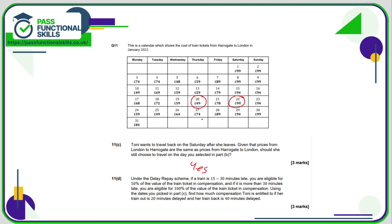Under the delay repay scheme: if a train is 15 to 30 minutes late you're eligible for 50% of the ticket value; more than 30 minutes late gets you 100%. Using the selected dates — 49 pounds outward on Thursday, 99 pounds return on Saturday — if the first train is 20 minutes delayed that's 50% off 49: 49 divided by 2 is £24.50. The return train is 40 minutes delayed, so a full refund of £99. Total compensation: 99 plus 24.50 equals £123.50.